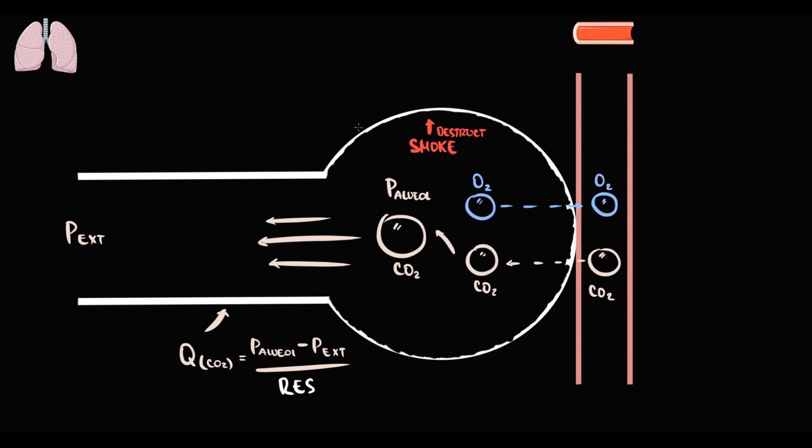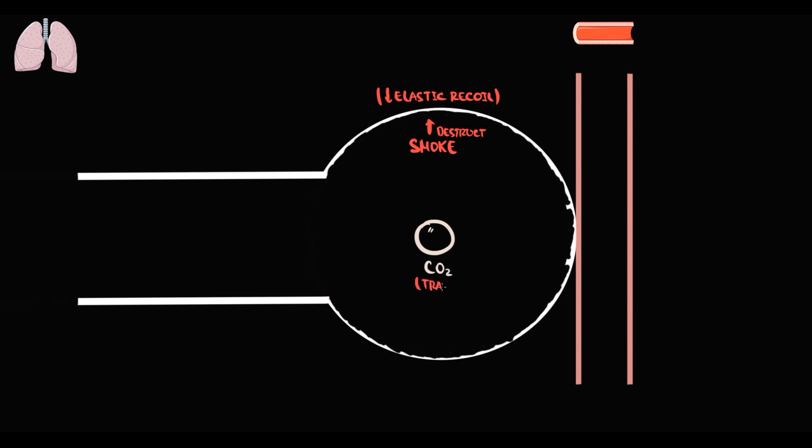With decreasing elastic recoil, the ability of the alveoli to create pressure decreases. Because of this, on exhalation the pressure inside the alveoli decreases. As a result, the airflow decreases. Because of decreasing elastic recoil, alveoli cannot push enough carbon dioxide out of the alveoli. So some portion of carbon dioxide remains in the alveoli. We call this phenomenon air trapping. Now on inspiration we already have a significant amount of carbon dioxide in the alveoli.